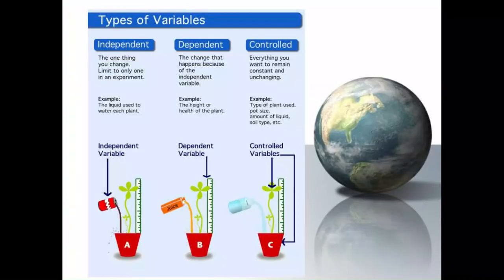So the types of variables, if we were looking at different types of liquid and their effect on plant growth, the independent variable is the one thing you change. And we limit it to one per experiment. The dependent variable is the change that happens because of the independent variable. And then the controls are everything that you want to remain the same.